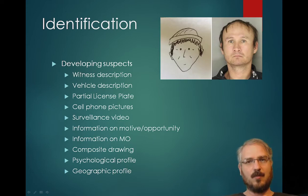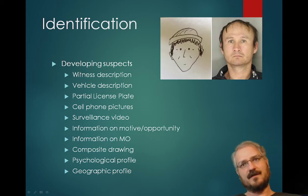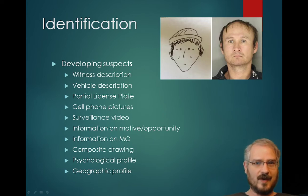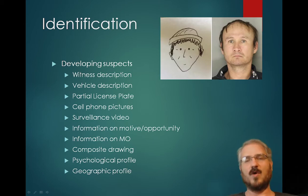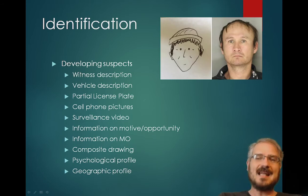Step one is to develop a suspect — to go from 'we have no idea who did it' to 'we think we might know who did it.' There are lots of different ways and methods to do this. We can start with a witness description. If there was a witness who saw the crime — most commonly the victim, assuming they're not dead — they can describe the offender's rough age, height, race, and gender.